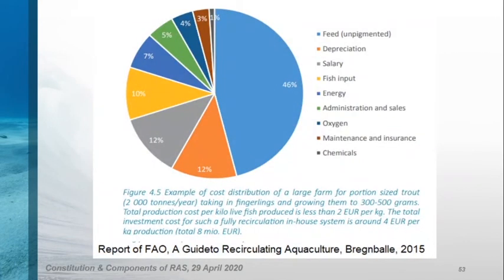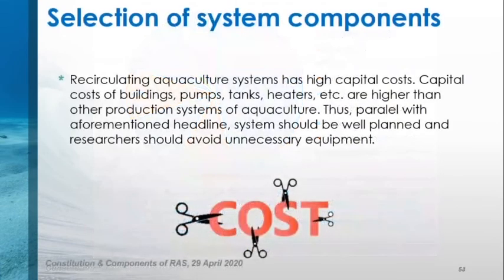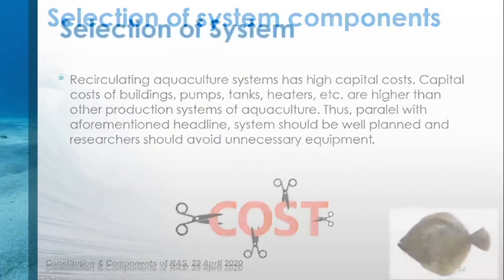According to a power report, you can see the cost distribution of trout culturing in a recirculating aquaculture system. Approximately half of the cost is from feeding. When we consider energy, depreciation, and maintenance, which are known as high capital costs in these units, we saw that they compose only 22 percent of the total cost. I don't think that is too much, because any open flow system will have similar operational costs, especially with the same feed usage. Capital costs of buildings, pumps, tanks, and heaters are higher than other production systems. Thus, with a financial headline, the system should be carefully designed and researchers should avoid unnecessary equipment in the construction of the system.